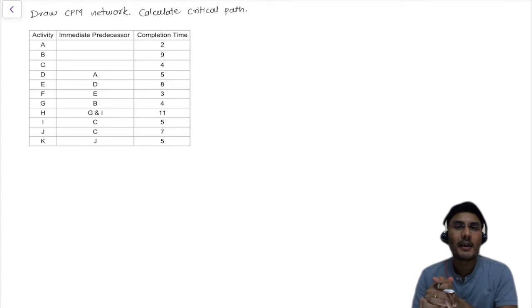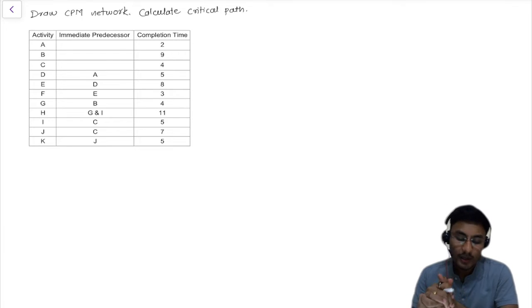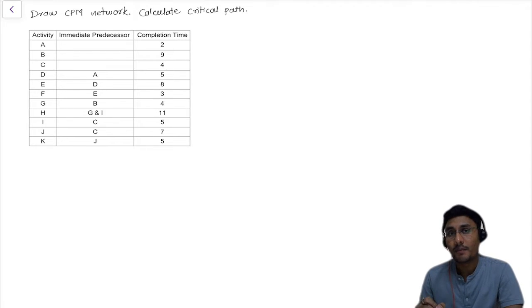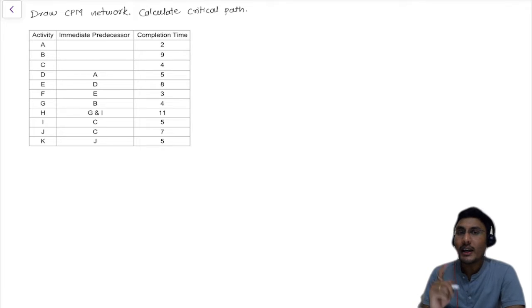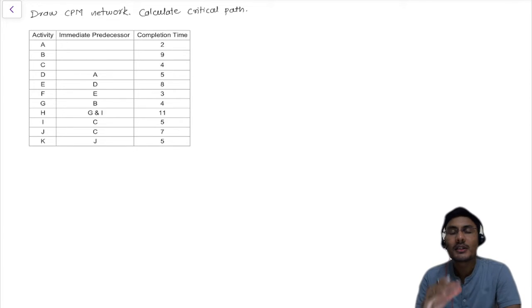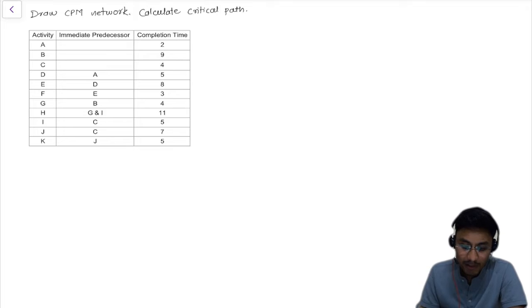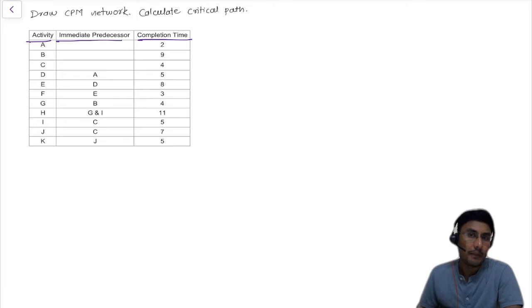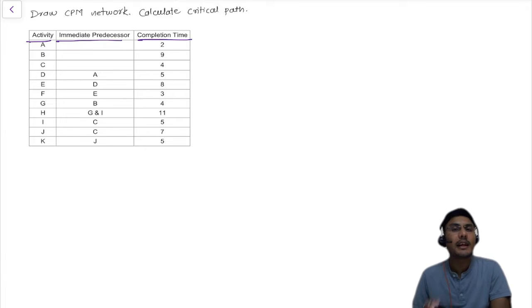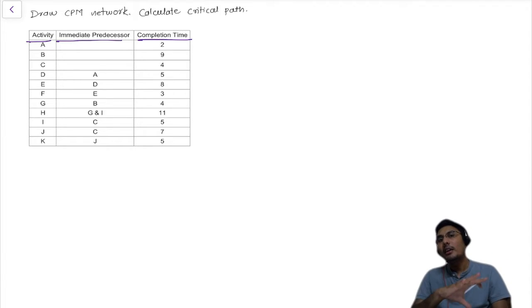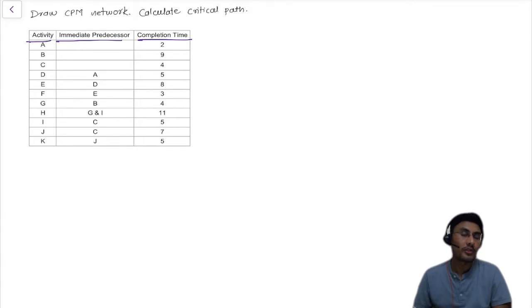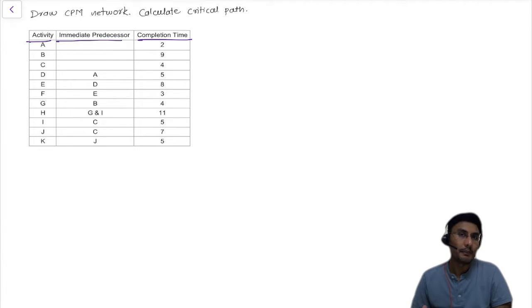Hi guys, my name is Paragpal and welcome back to my new video. In this video we are going to solve the critical path method numerical in easy steps. We have some available data such as activity, immediate predecessors, and the completion time. With the help of this table we are going to draw a network diagram and also calculate the float, and with the help of that float we can identify the critical path.